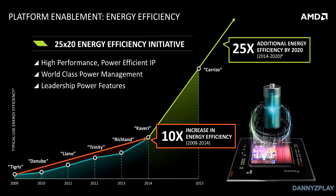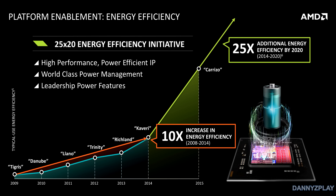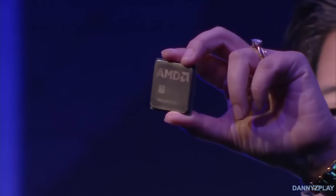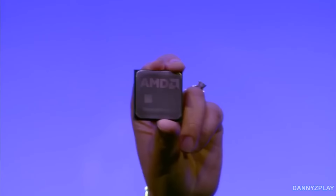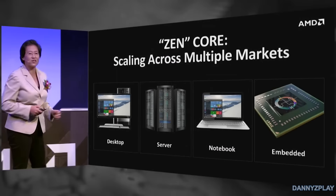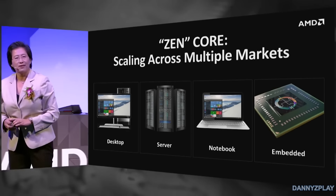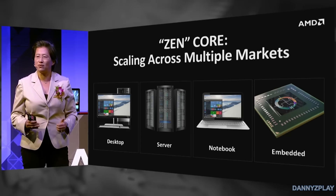Being on a new manufacturing process, these new chips will be significantly more energy efficient. At Computex 2016, we were shown a very early engineering sample of AMD's Summit Ridge — an 8-core, 16-thread CPU based on Zen utilizing AM4. AMD also mentioned at Computex that with Zen they will be targeting multiple market segments, including the desktop market for gamers and content creators, the server market, notebooks, and embedded products.